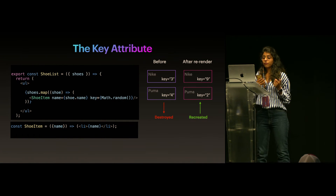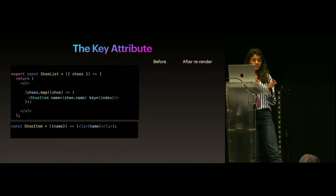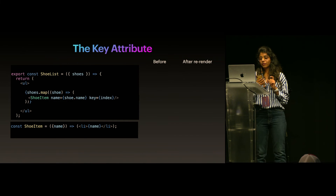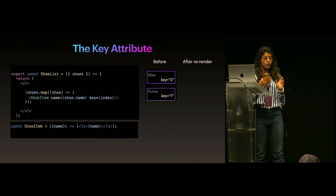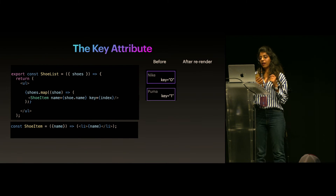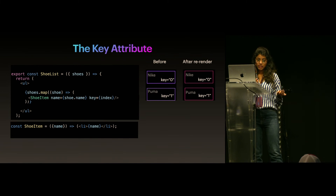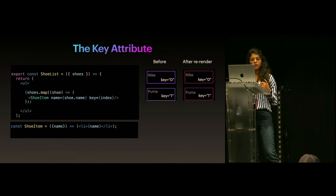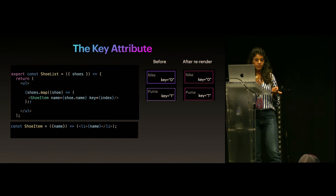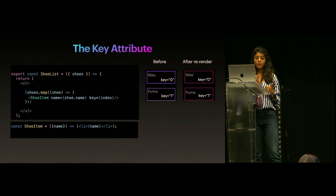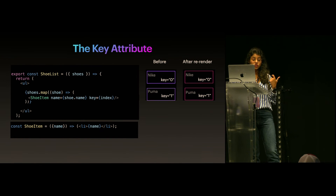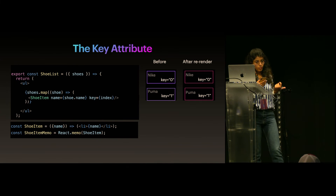What about using index as a key? If we provide index as a key, before a re-render it's 0, 1, etc., and after the re-render it stays the same — so it appears fine. But we are missing something: if the parent re-renders, child re-renders no matter what, so we also have to memoize the shoe item component.